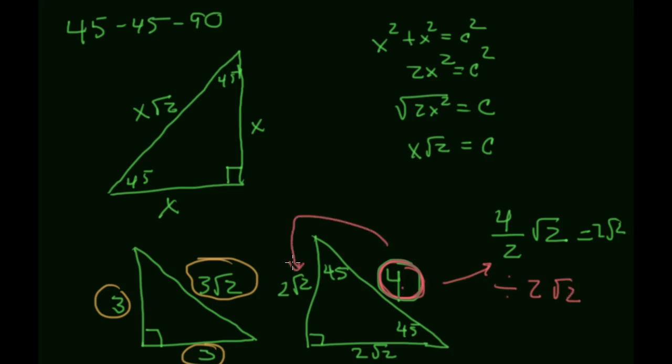So 4 divided by 2 is 2, put a radical 2 on it, and that gives me those two sides. So that's how you work with 45-45-90 right triangles. Our next move is going to be to look at the other special right triangle.